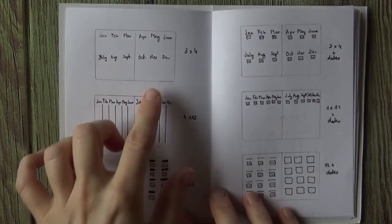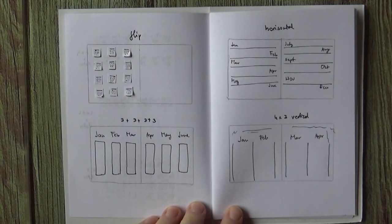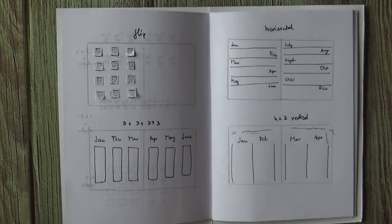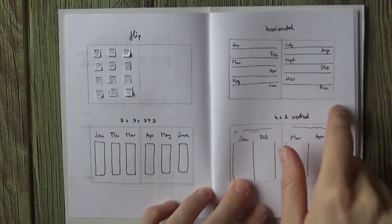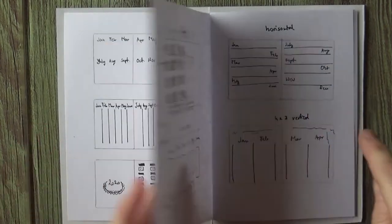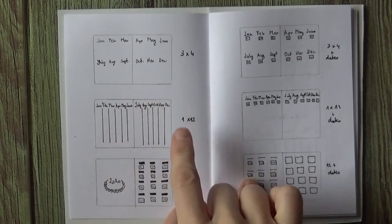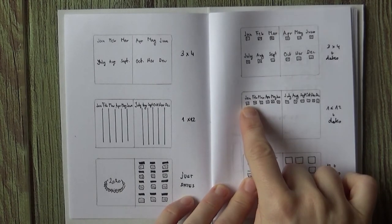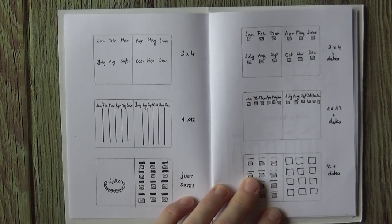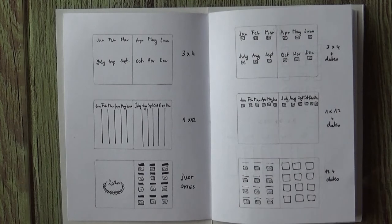These are all two-page spreads and you can see the different layouts that you can do to write the events and the tasks that you know you'll have to do in a certain month. It can be horizontal and you can fit all 12 months into two-page spread. It can be vertical with again all the months on the two-page spread. You can add a little calendar at the top below the name of the month or you can make a 3x4 or 4x3 or whatever style you want.